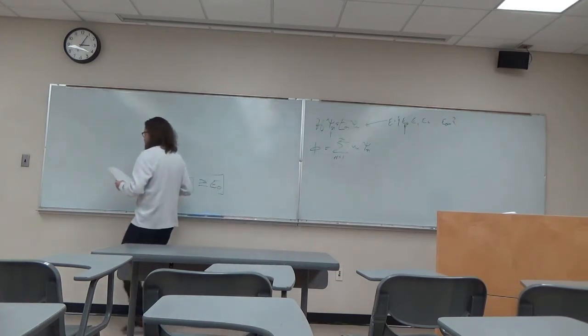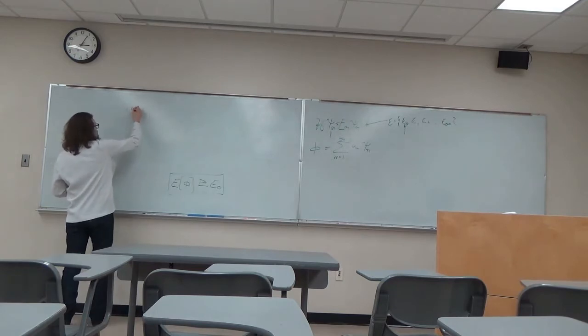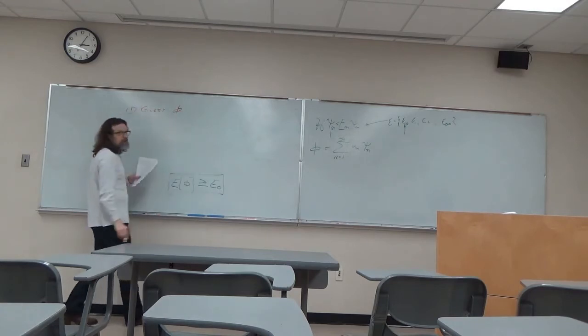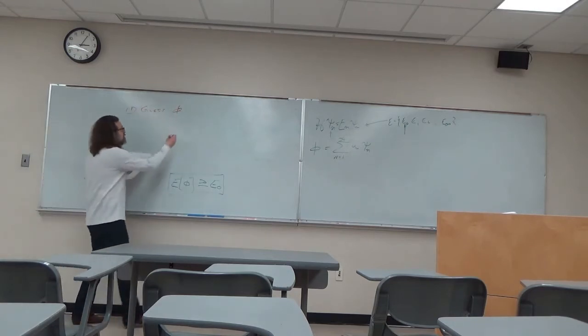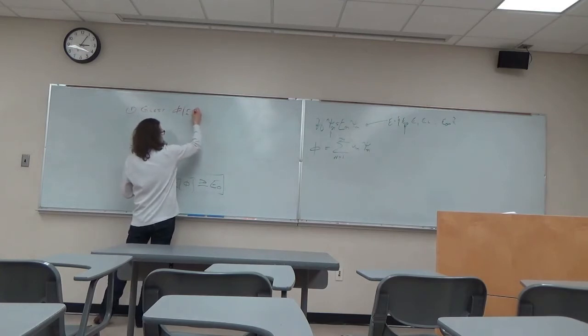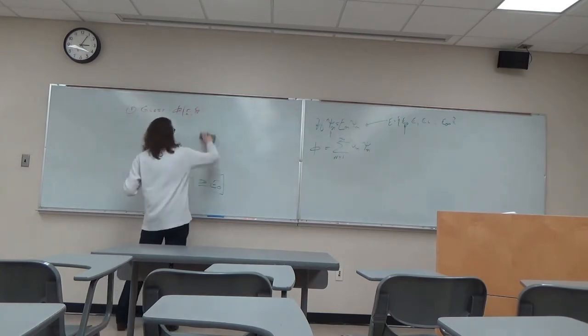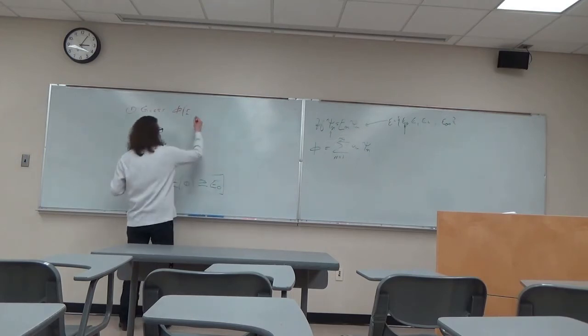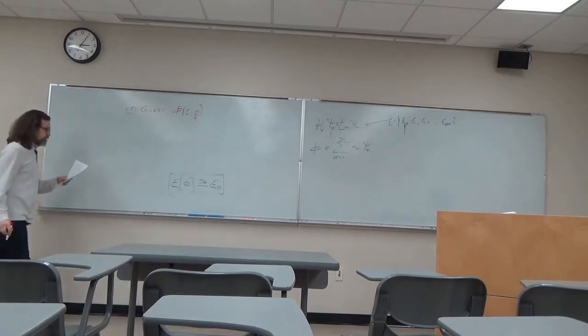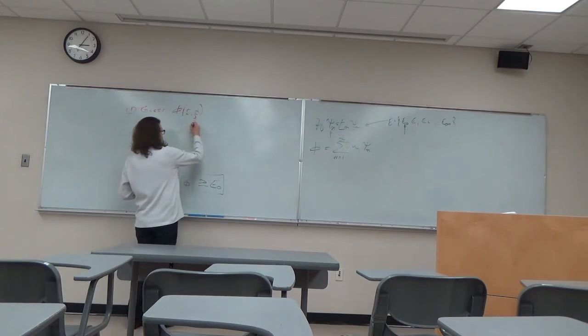The method is to, one, guess some trial wave function. The trial wave function will be a function of position and some set, some set of parameters that are adjustable. Variational parameters.